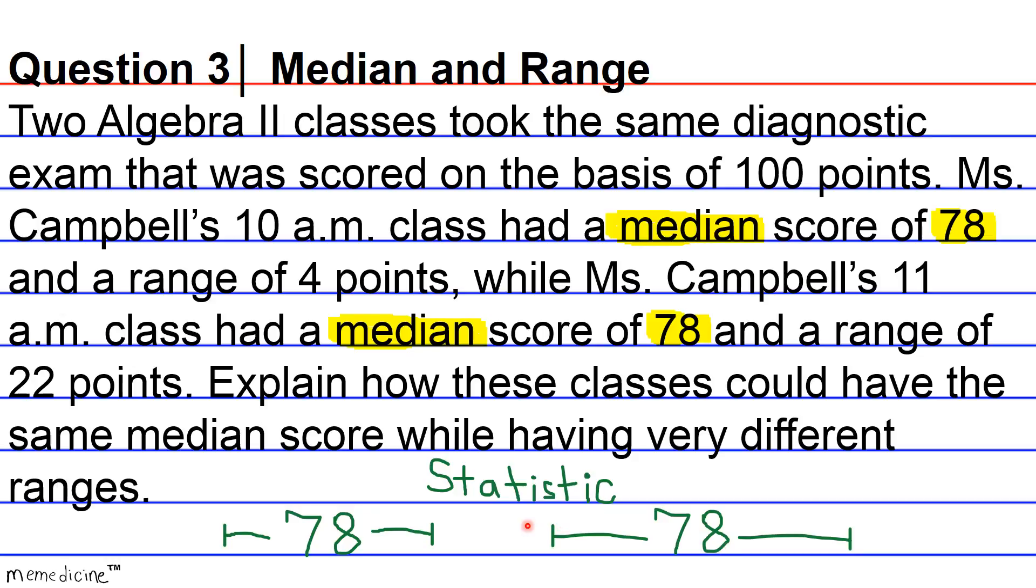So let's say for example's sake, we're not told this in the problem, but we're just doing an example range. An example range for Ms. Campbell's 10 a.m. class could have been from 76 to let's say 80. Whereas a range for her 11 a.m. class could have been from 70 to 92. And these are pretty good test scores actually.